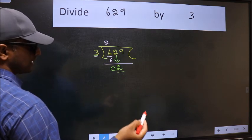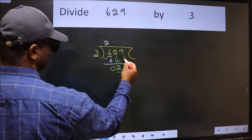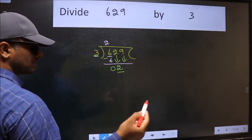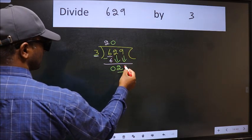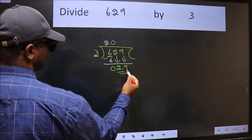So we should bring down the 2nd number. And the rule to bring down 2nd number is we should put 0 here. Then only we can bring down this number. Now 29.